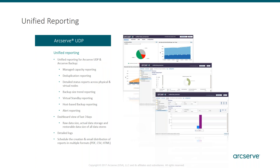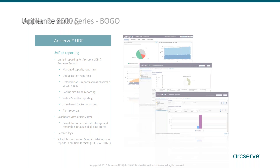Reporting is always important. It's good to understand what's going on — how much capacity are you backing up, what are your deduplication and compression ratios, how is your data growing? Backup size trending reports are very important to understand from a growth perspective — do you have enough storage, will you have enough storage a year from now? There are plenty of other reports, including backup status reports, with the trending reports being among the most common.